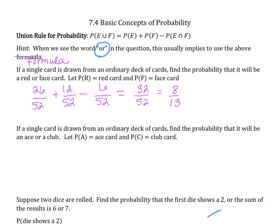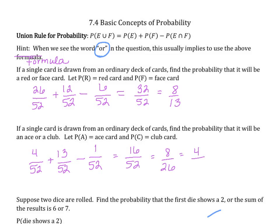If a single card is drawn from an ordinary deck of cards, find the probability that it would be an ace or a club. Let P(A) equal an ace card and P(C) equal a club card. The probability of an ace is 4 out of 52. Adding the probability of a club, there are 13 clubs in a deck, so 13 out of 52. We subtract the one card that is both an ace and a club: 1 out of 52. So 4 plus 13 minus 1 is 16 out of 52, which reduces by dividing by 4 to give 4 out of 13.